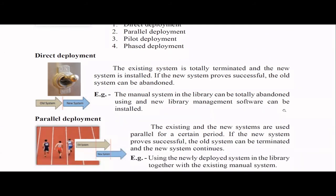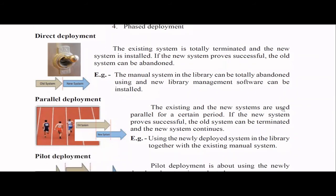That's why we have parallel deployment: the existing system and the new system run in parallel for a certain period. If the new system is successful, only then do they slowly terminate the old one. But parallel deployment has problems too: it's costly because you have to run two systems with servers, maintenance staff, and data entry for both simultaneously. Also, end users will never shift to the new system — they'll keep using the comfortable old one, so you may never actually replace it.